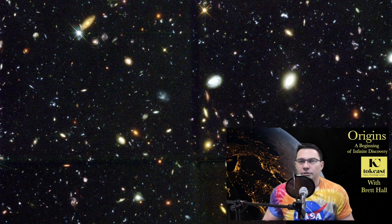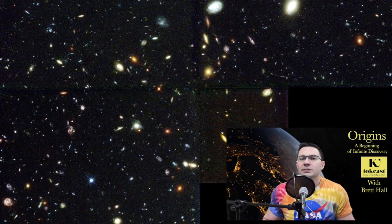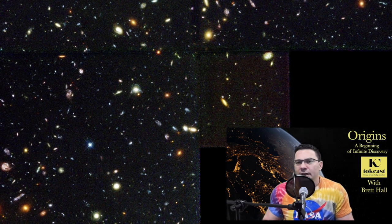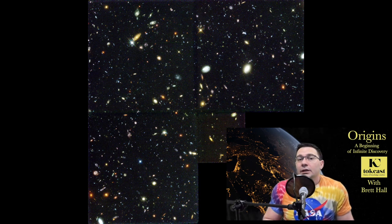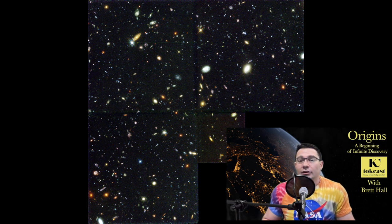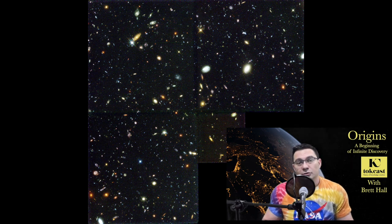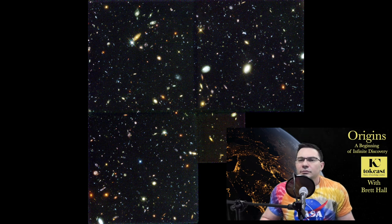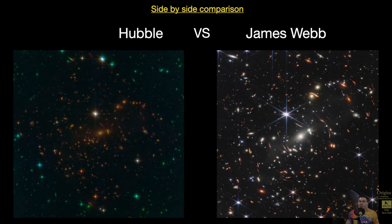The James Webb telescope has demonstrated over the last couple of days and will continue to show what a leap in technology it is over the Hubble. One of the most amazing pictures ever taken by Hubble was the so-called Hubble Deep Field, and then the Hubble Ultra Deep Field. Here is the first one of those, the Hubble Deep Field. This took two weeks of exposure, two weeks of pointing the telescope at the same patch of sky, collecting a tiny amount of light hour after hour and adding it all together.